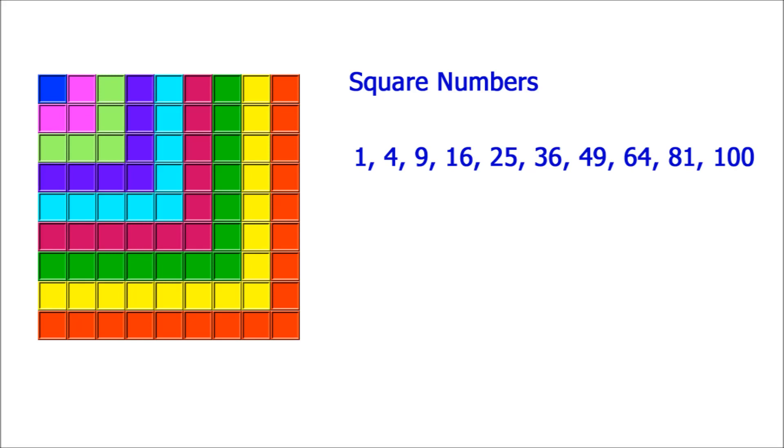So there are two ways of getting the square numbers. Either we know our times tables or we're using a calculator. And we can write down a square number given 3, for example, 3 squared is 9.